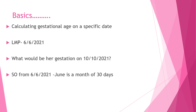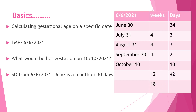Now I want to calculate the gestational age on a specific date. With an LMP of 6th June, what would the gestational age be on 10th October 2021? June is a month of 30 days. I subtract 6 from 30, leaving 24 remaining days in June.